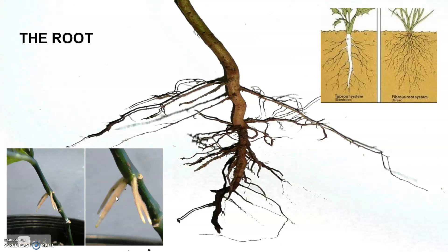The main functions of the root system are: absorption of water and minerals from the soil, providing proper anchorage to the plant parts, storing reserve food material, and the synthesis of plant growth regulators.